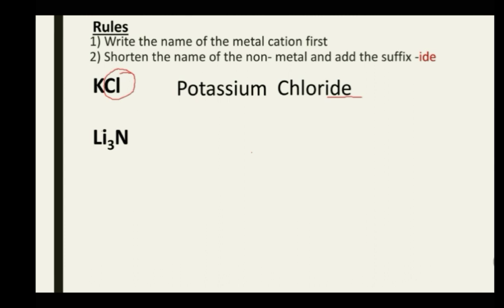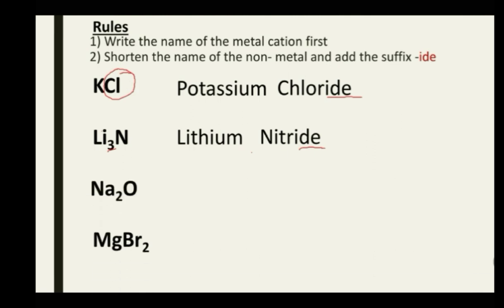For Li₃N: the metal is named first, so lithium. The subscript 3 doesn't play any role in the name, so we ignore it and focus on the non-metal, which is nitrogen. We take the root name 'nitr' and add the suffix '-ide' — it becomes nitride. So Li₃N is lithium nitride.